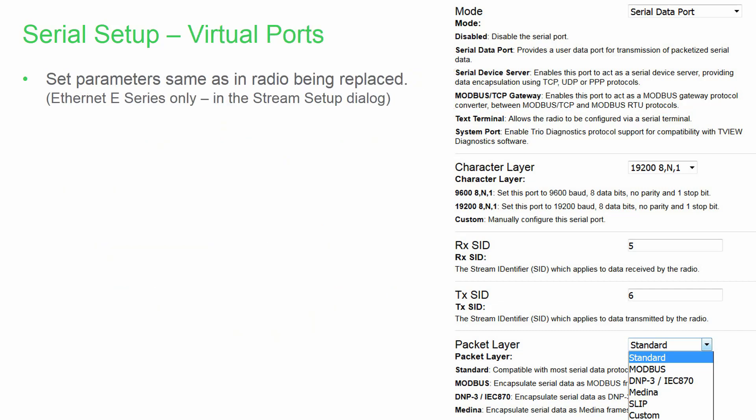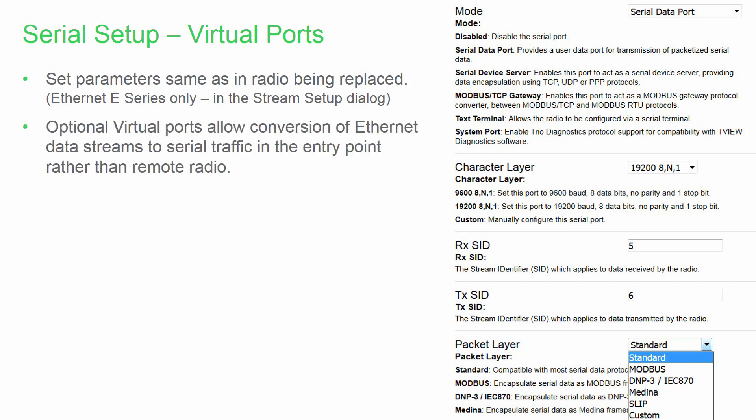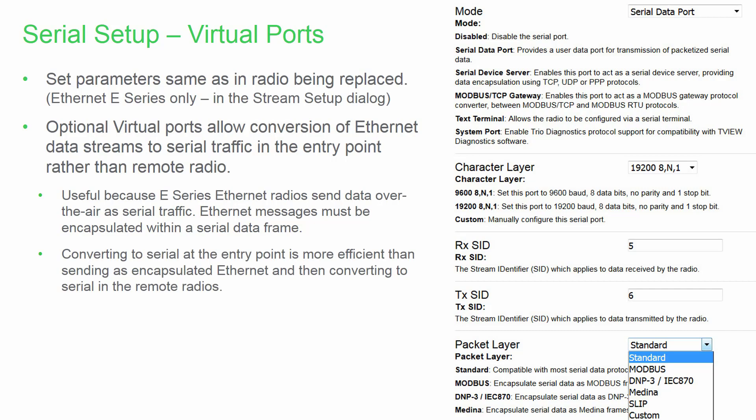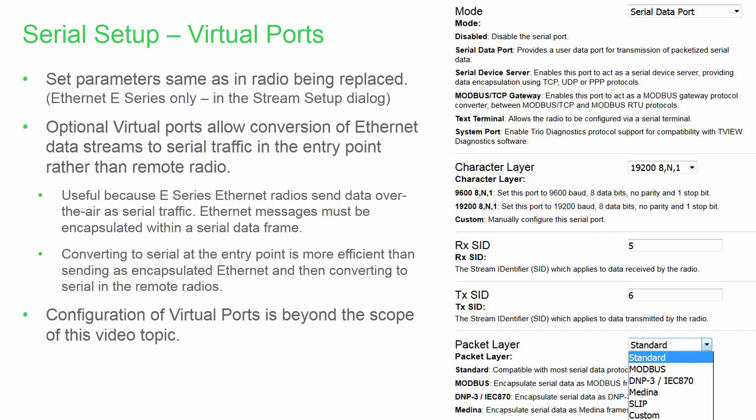These parameters must be set the same as in the radio being replaced. Virtual ports exist only in the Ethernet E-Series radios, not the serial-only radios. These optional virtual ports allow conversion of Ethernet data streams to serial traffic in the entry-point radio rather than the remote radio. This is useful because E-Series Ethernet radios send data over-the-air as serial traffic, and Ethernet messages must be encapsulated within a serial frame. Converting to serial at the entry-point is more efficient than sending as encapsulated Ethernet and then converting to serial in the remote radio. Specifics of virtual port configuration are beyond the scope of this video; refer to the Ethernet E-Series user manual if more information is needed.